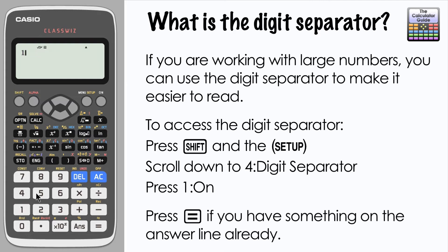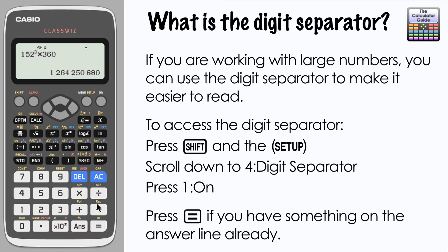Let's just check that with the result of a calculation. I'm going to do 152 cubed times 360 as an example, and here we have the solution 1,264,250,880. Each of the separators there can potentially help you read the number more clearly, but this only works with larger numbers rather than particularly small numbers.